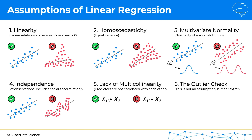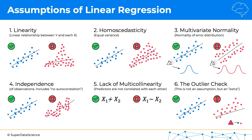And the sixth point is the outlier check. This is not an actual assumption, but rather an extra check that is important to keep in mind when building linear regression models. If you look at the chart here on the right, you can see that the outlier is significantly affecting the linear regression line. So something we want to consider is: should we remove the outliers before building a linear regression, or do we want to build a linear regression with the outliers included? This will depend on your business knowledge and knowledge of the dataset.